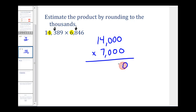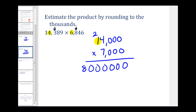Notice the first three digits on the right are zero, so we'll have three zeros in our product. Now we'll just multiply by seven. Seven times zero is zero, seven times zero is zero, seven times zero is zero, seven times four would be 28 — write down the eight and carry the two. Seven times one is seven plus two, which is nine. So our estimation is 98 million. Notice this was a lot less work than finding the original product, so if we don't need to be precise, this is a great way to estimate.